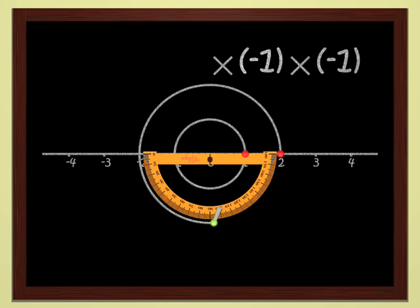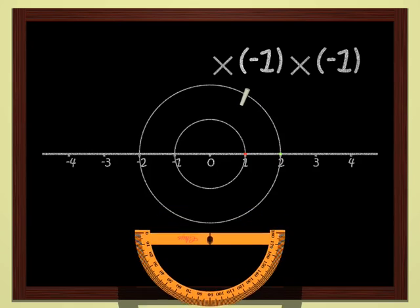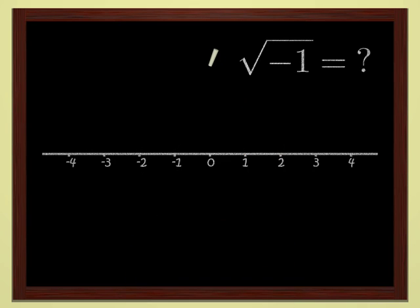Therefore, there is no number which, multiplied by itself, yields minus one. Another way of saying this is that minus one has no square root.